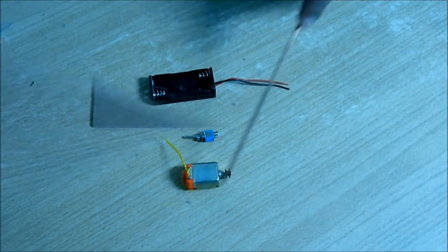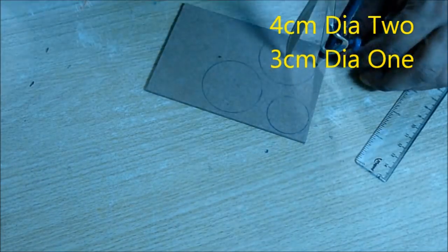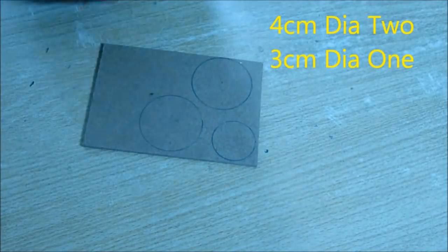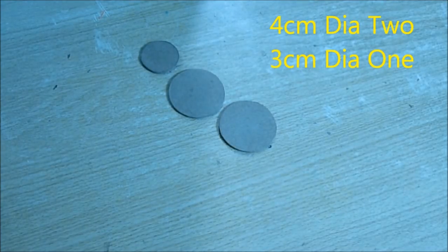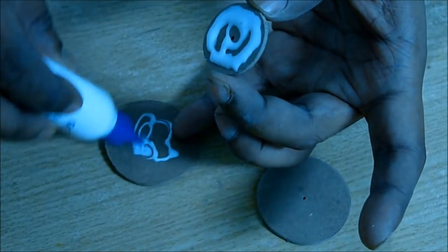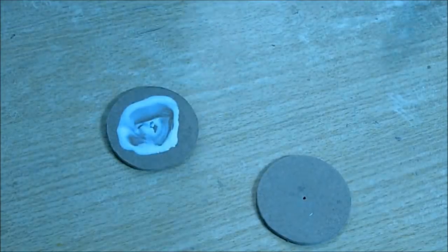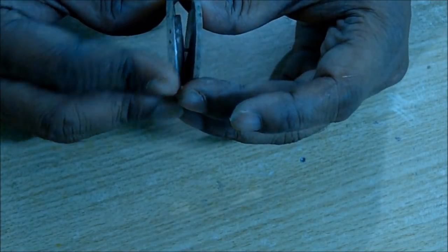Now we have to make a big pulley from cardboard. Draw two four centimeter diameter wheels and one three centimeter diameter wheel. Glue the small wheel in between these two big wheels. Keep in mind the centers should match, and then dry it under pressure.